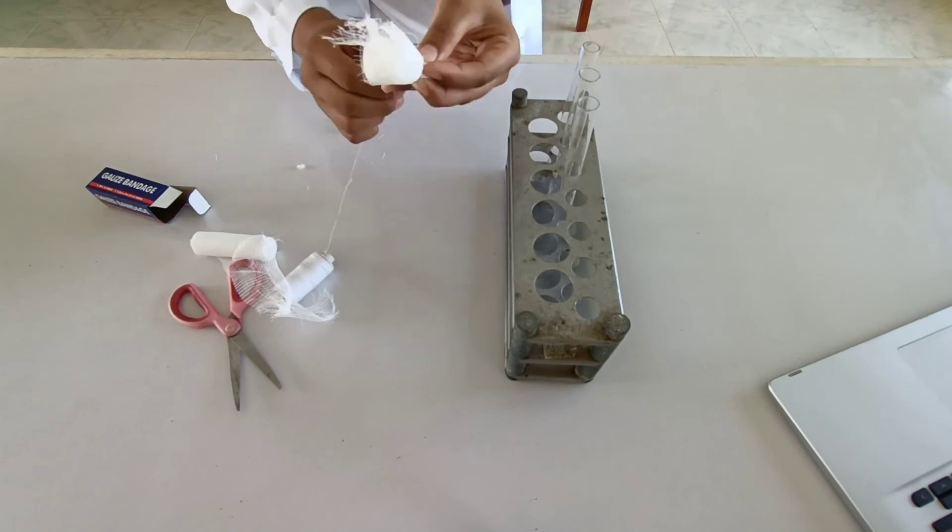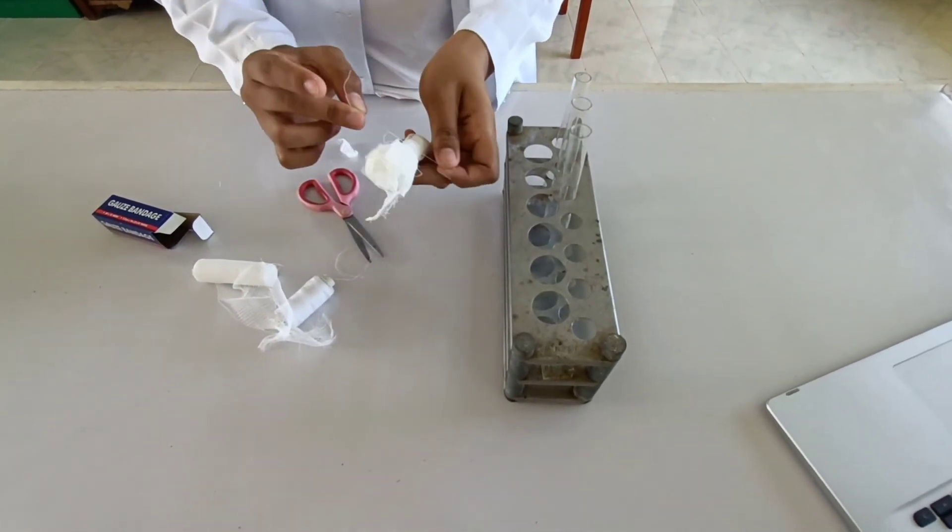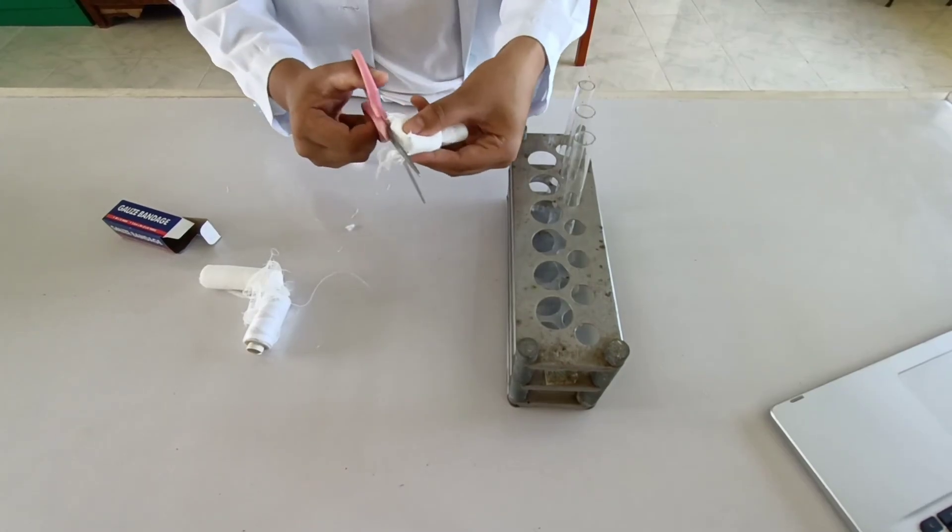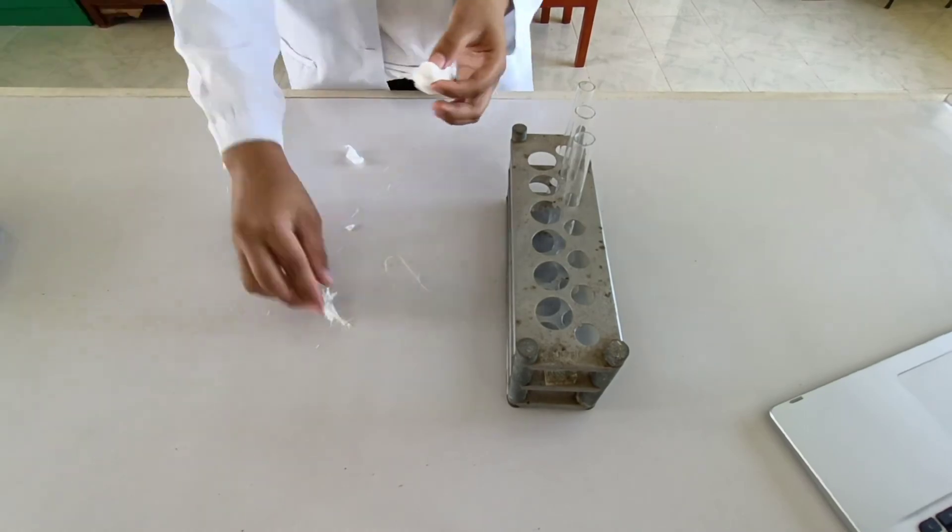Get the thread and tie it approximately one inch from the end. Then lastly, cut the extras. And here is the result in making a cotton plug for test tubes.